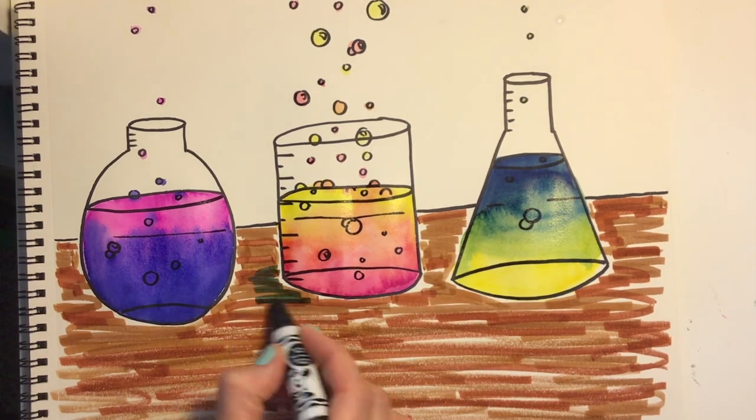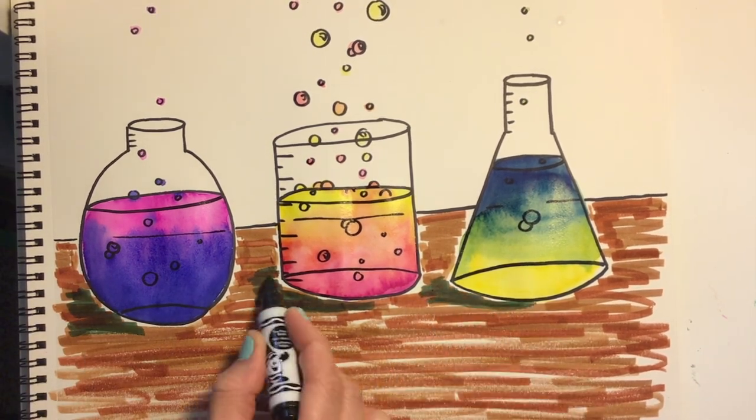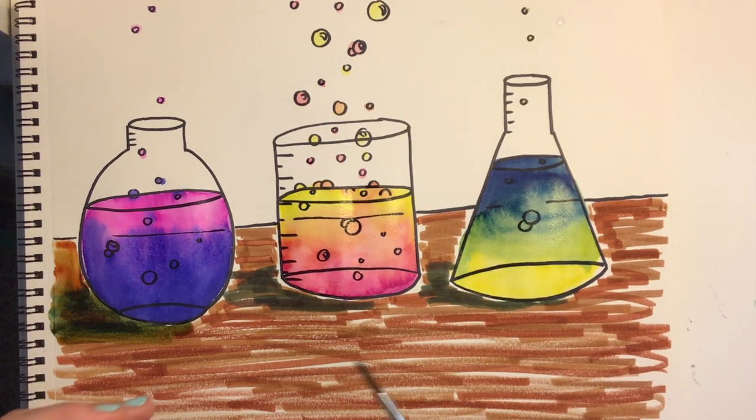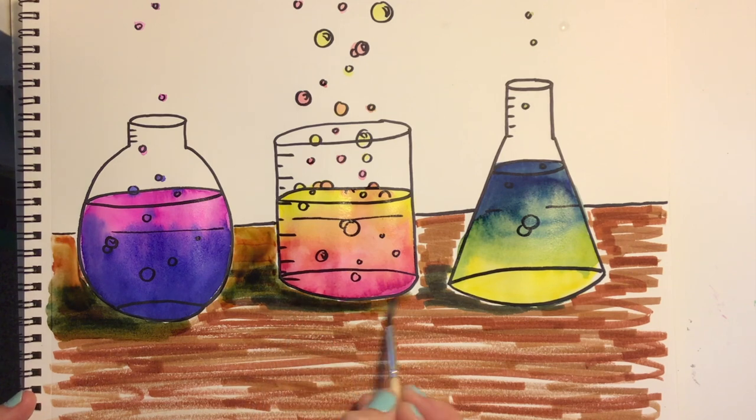You don't have to do this next step, but I'm grabbing black and adding a shadow on the left of each of my beakers. Now it's time to grab that water and paintbrush again and paint over all of my markers.